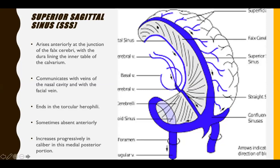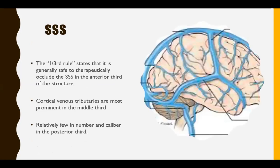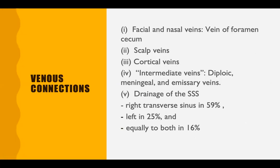The superior sagittal sinus arises at the anterior junction of the falx cerebri with the dural lining of the inner table of the calvaria. It drains the nasal and frontal veins and ends in the torcula. It is occasionally absent anteriorly, and its caliber increases posteriorly. The one-third rule states that even if the anterior part is occluded there won't be significant issues, as the main cortical venous tributaries arise from the middle third. Drainage is to the right transverse sinus in 59% of patients, left in 25%, and equal in 16%.